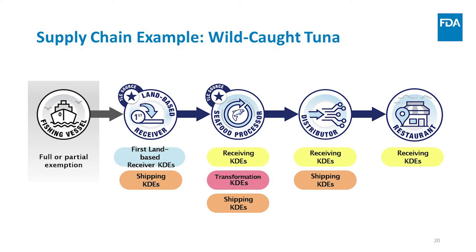Maintaining these key data elements at each critical tracking event in the supply chain is essential and is a requirement of the rule. This will ensure that if an outbreak does occur, FDA is able to quickly and efficiently trace the contaminated food through the supply chain. The FDA can provide critical information to the public more quickly and work with the affected firms to remove any contaminated product from the marketplace, avoiding additional illnesses and potentially saving lives. Additional information about the requirements and the final rule are available on our website at www.fda.gov.